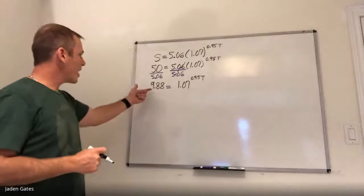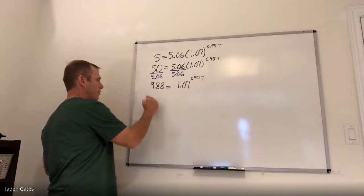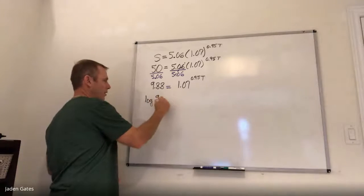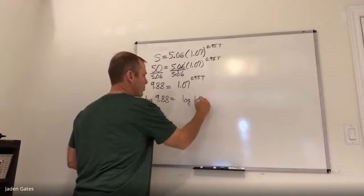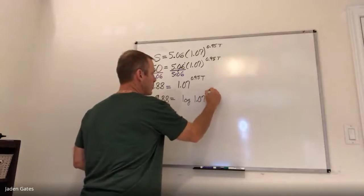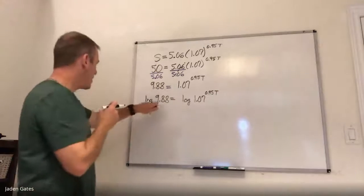All right. And now again, this is kind of like review. Hopefully, we're going to take a log at both sides. And again, the reason I'm doing that is because I'm solving for an exponent and I can use that log rule that brings the exponent down in front.